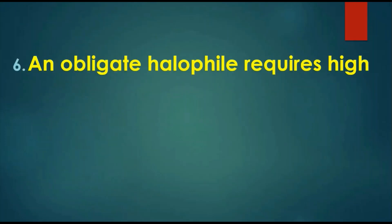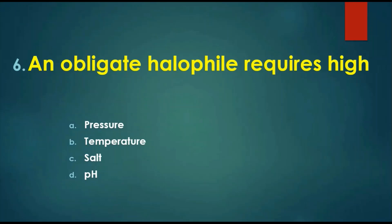Question 6: An obligate halophile requires high — options are: A) pressure, B) temperature, C) salt, D) pH. The answer is salt. If it is pressure, it is a barophile. If it is temperature, we have mesophile, psychrophile, or thermophile. If it is pH, it is neutrophile, basophile, or acidophile.